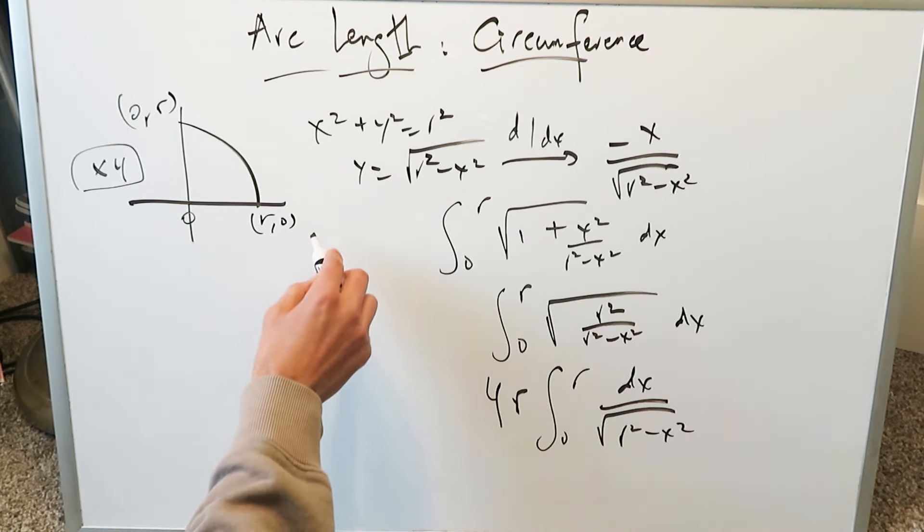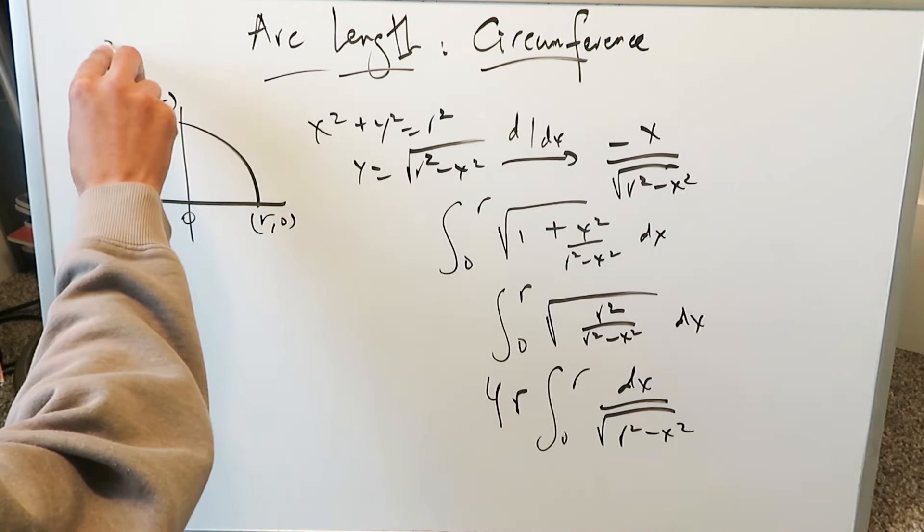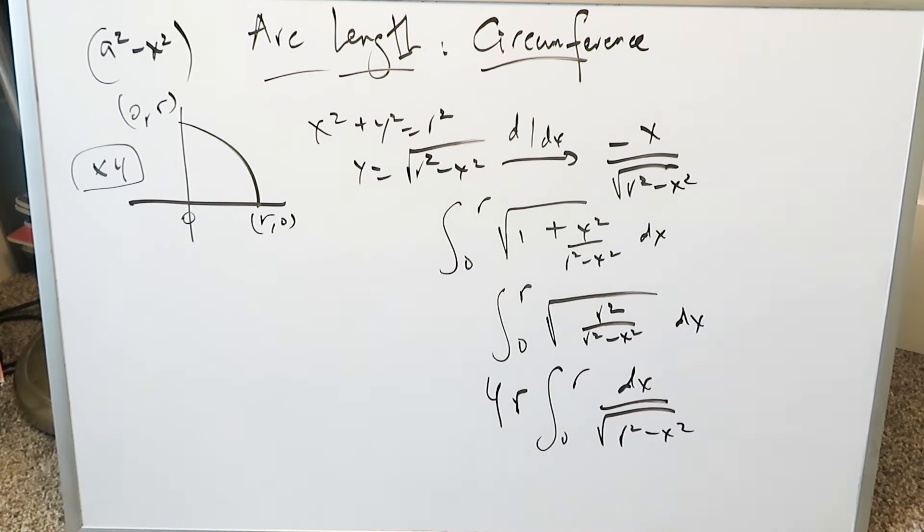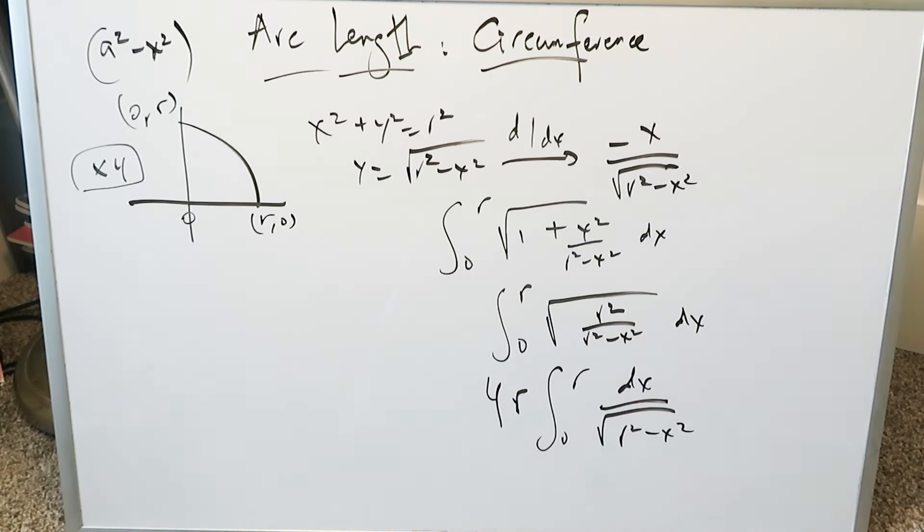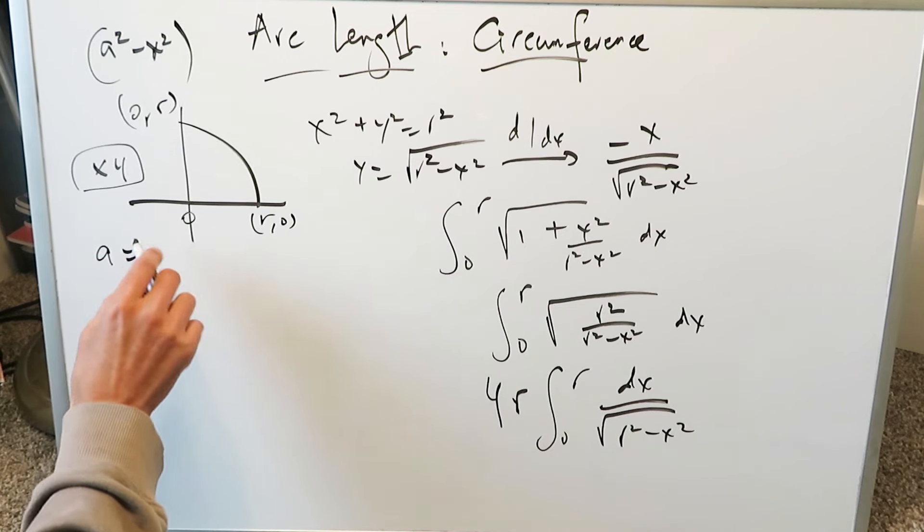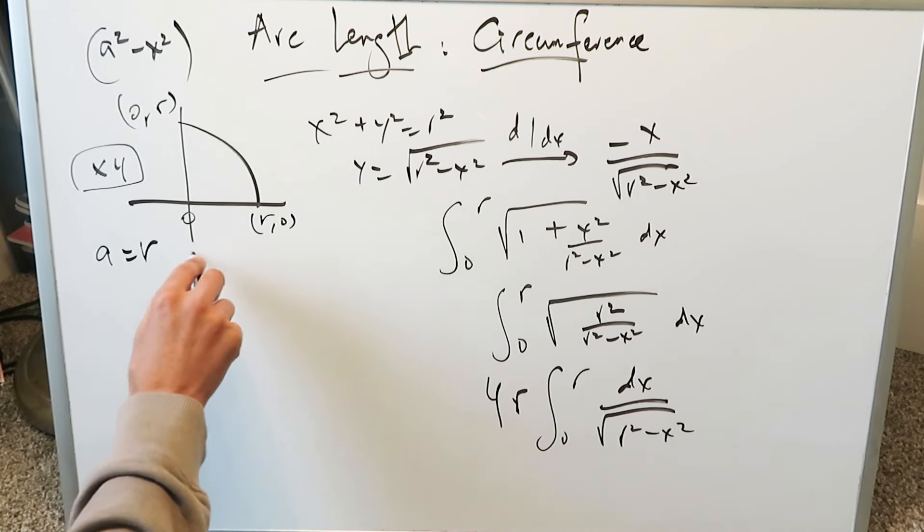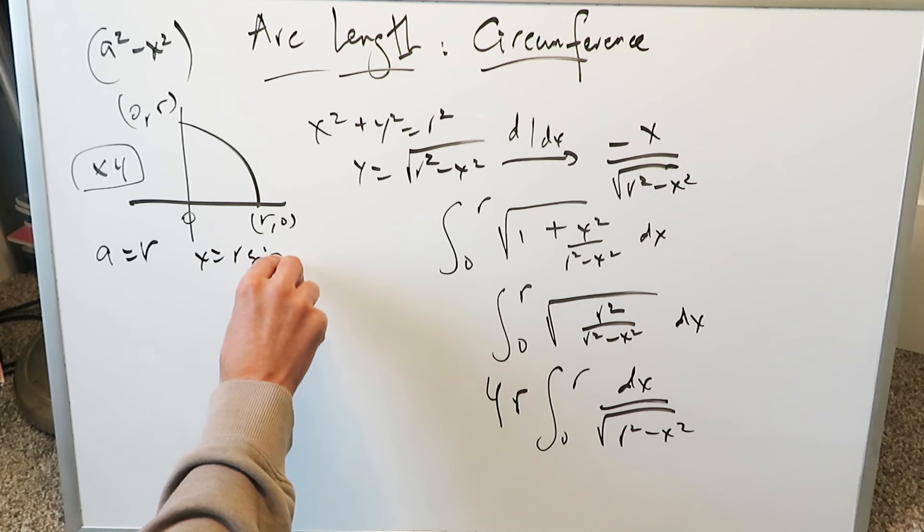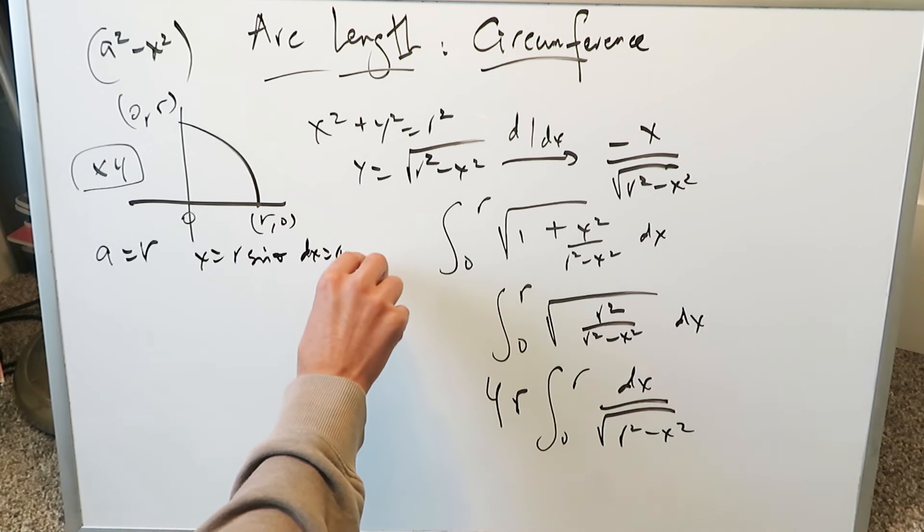Trigonometric substitution. Everything here is looking like a² - x² type of integrand for which you will do trigonometric substitution. We know a over here is basically r. x = r sin θ and dx = r cos θ dθ.